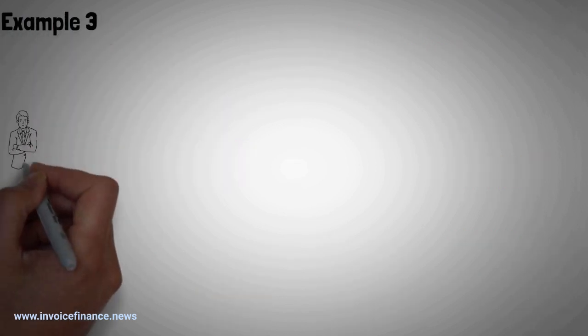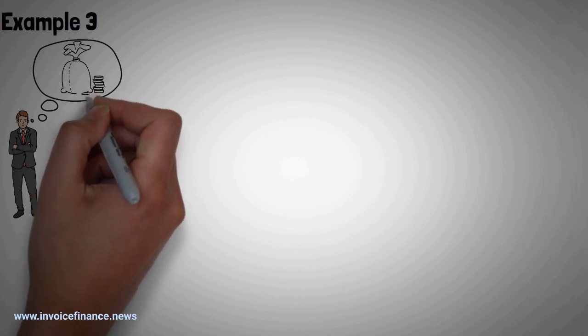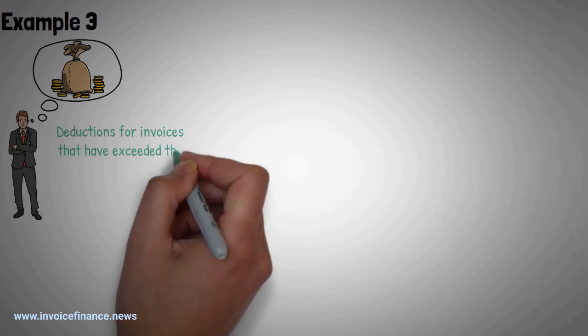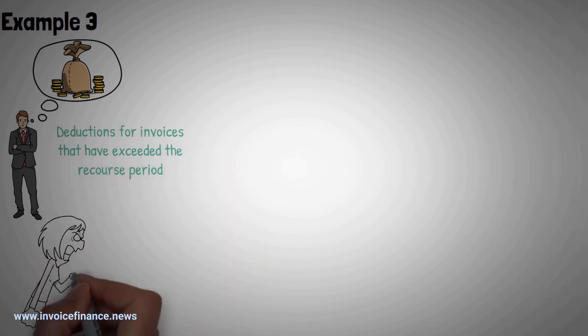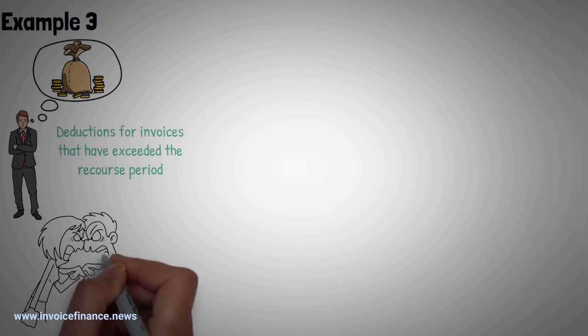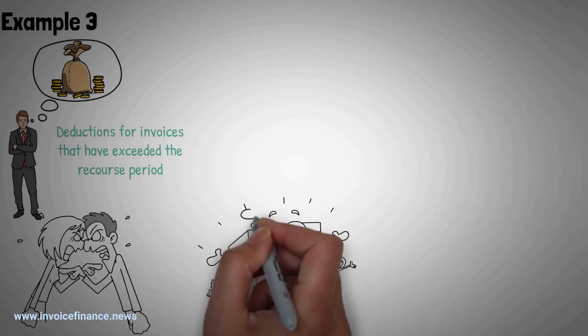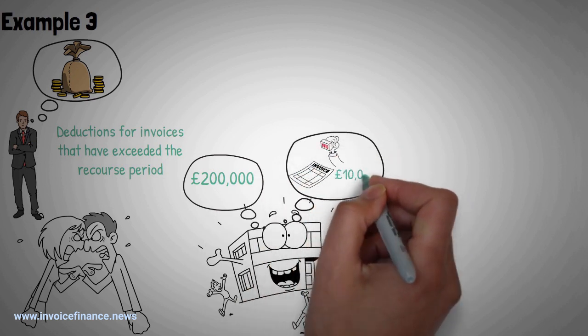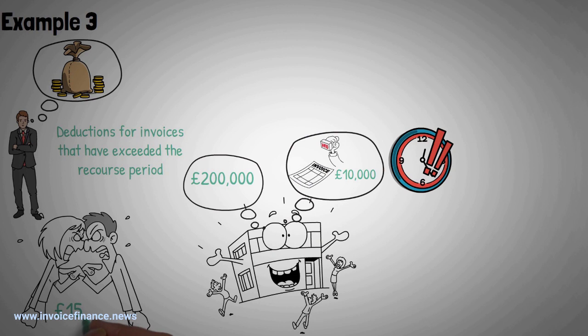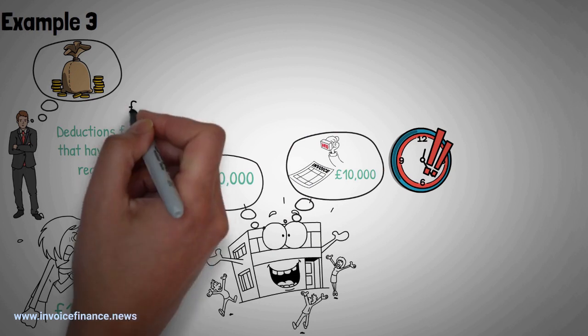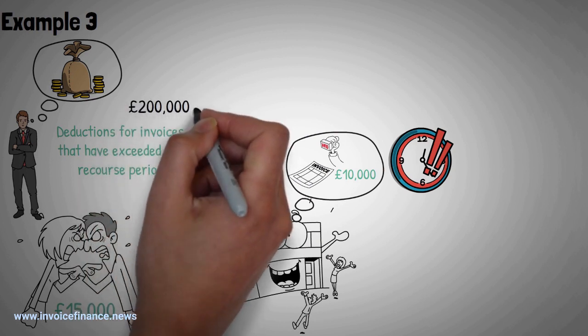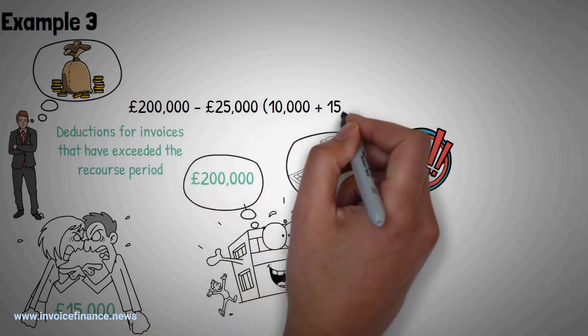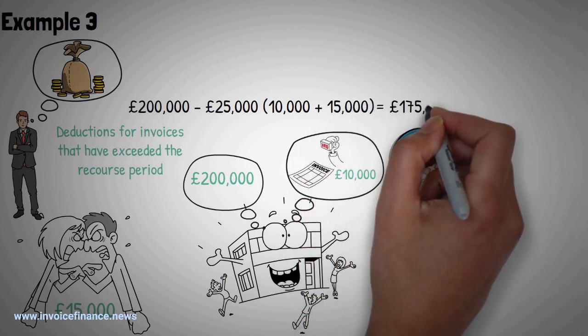Example 3: An invoice financier will look at the value of the total sales ledger and make deductions for invoices that have exceeded the recourse period, amount of time allowed for an invoice to be paid, and for invoices that are disputed. So if a company has a sales ledger totaling £200,000, and has invoices worth £10,000 that have exceeded their recourse period, and £15,000 worth of invoices that are disputed, then the total approved ledger will be £200,000 minus £25,000, £10,000 plus £15,000. That equals £175,000.